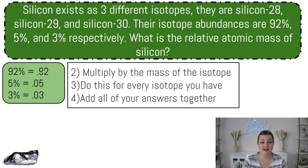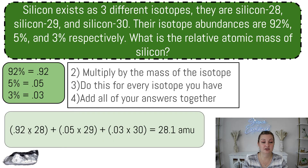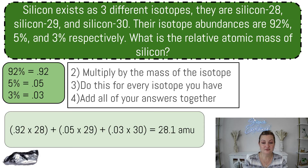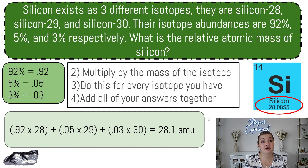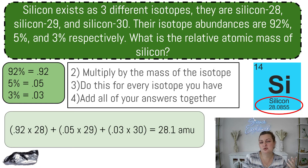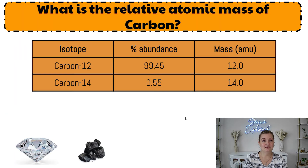Now we need to take the mass of each one of these and multiply them together. It said these were placed respectively, which means in order. So this 28 would go with the 92%, this 29 would go with the 5%, and this 30 would go with the 3%. So I'm going to take these numbers and multiply them, and then add them all up as my last step. Once I put it in my calculator, I end up getting 28.1 AMU — atomic mass unit. And if I look on the periodic table, silicon is 28.0855. That is pretty darn close! We're only off a tiny bit, and that just comes down to significant figures. So don't get worried if you're a tenth or even a hundredth off — that's based off of which significant figures were used. But realistically, we did it right.